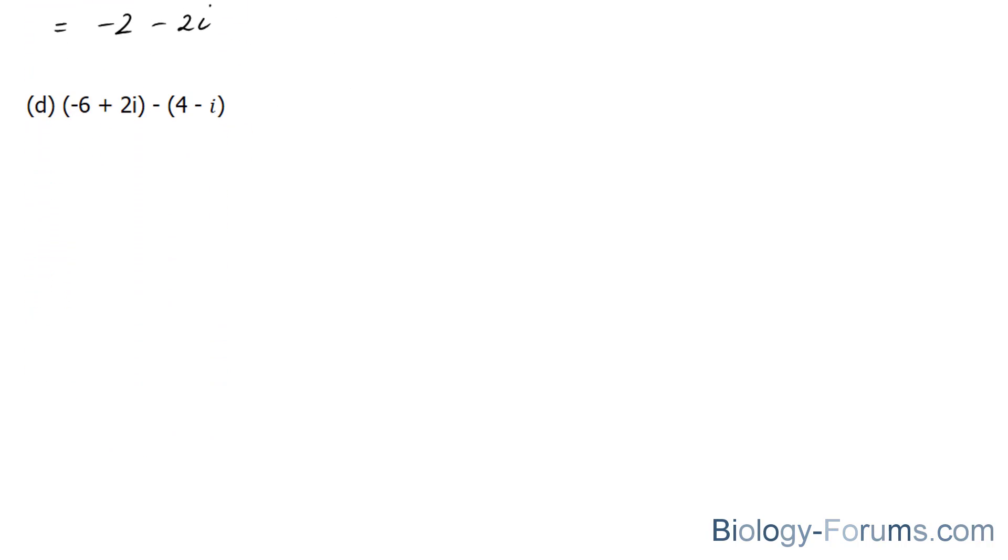Lastly, we have negative 6 plus 2i minus 4 minus i. Notice that the symbol in front of the parentheses here is a minus. Therefore, when we write this out, this term becomes minus 4 and this term becomes plus i. So the symbols change.